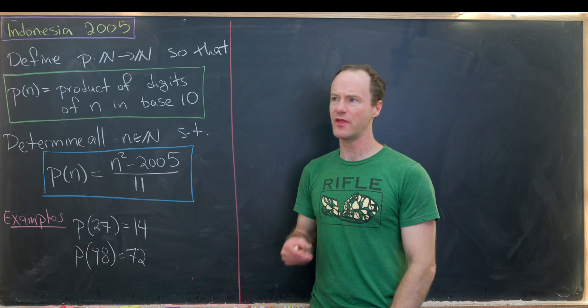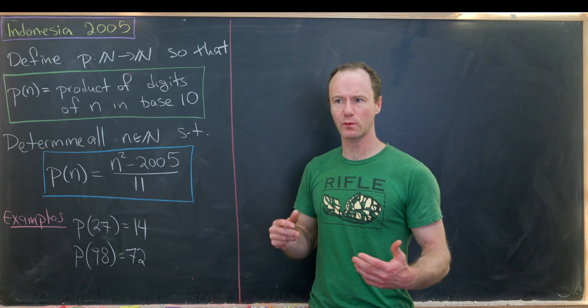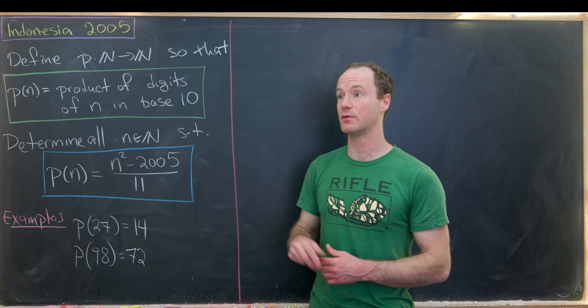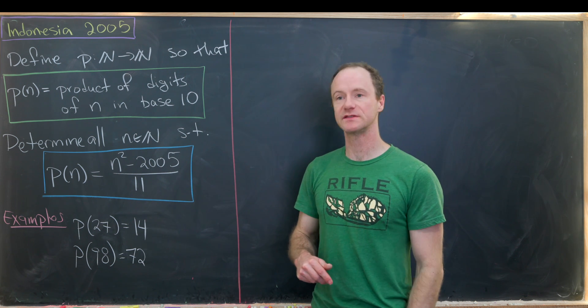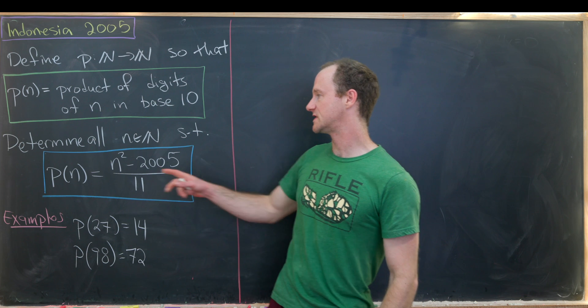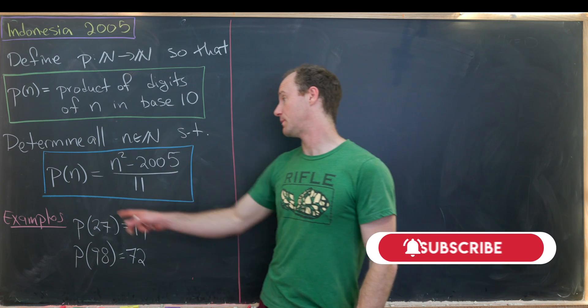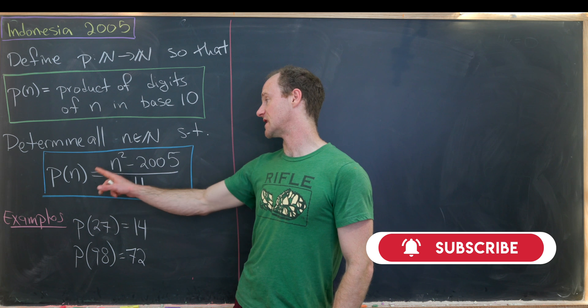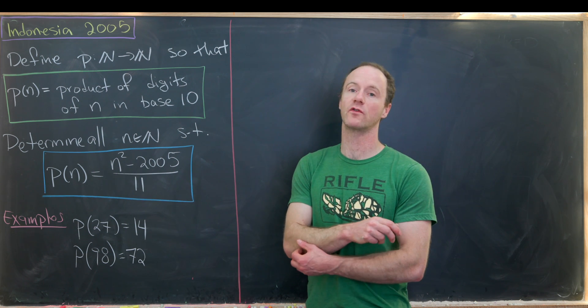So we could do this for other bases if you wanted to and that would be actually pretty interesting. Maybe after we're done with this if you want to work out a couple of examples working in other bases maybe post them in the comments. And then our goal is to determine all natural numbers n such that p evaluated at n is the same thing as n squared minus 2005 over 11.